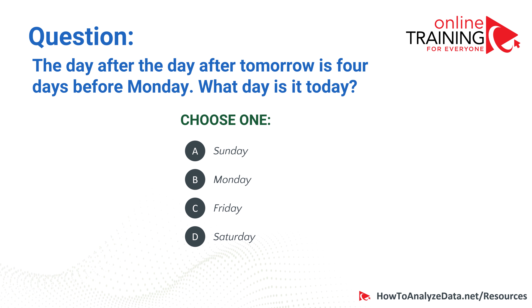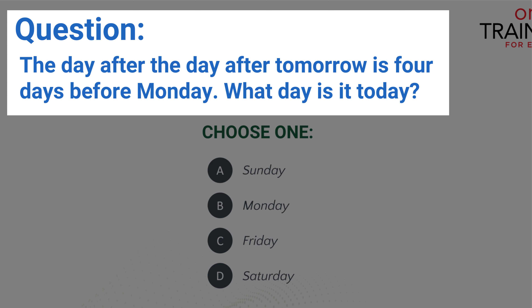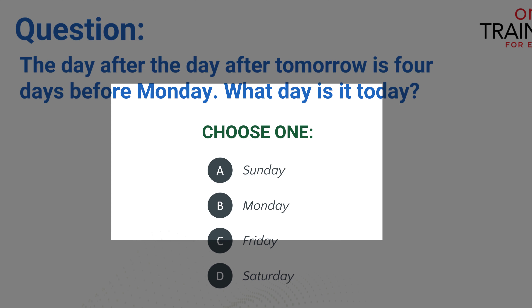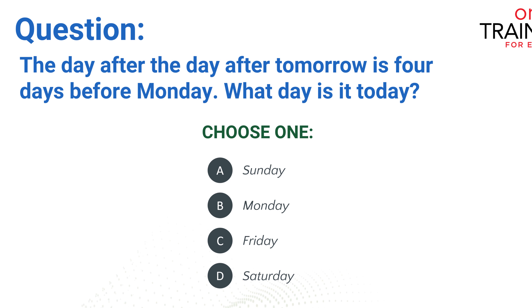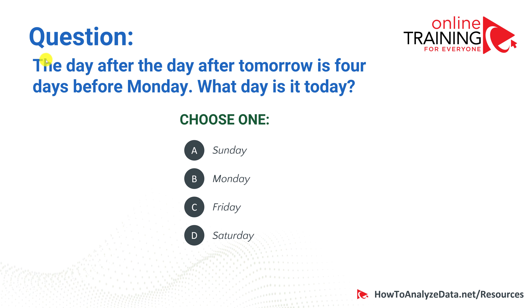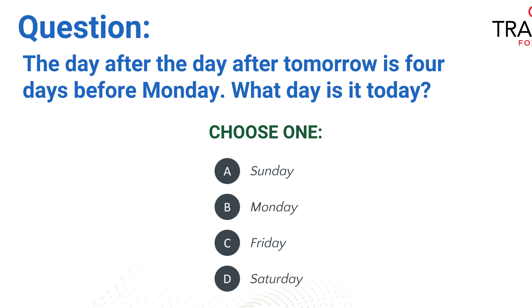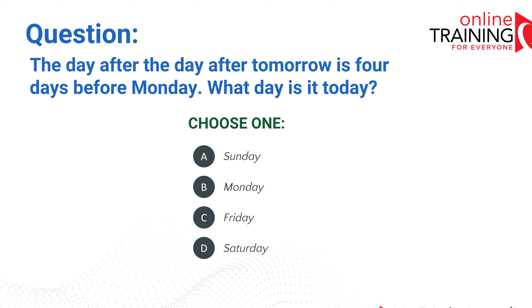Here is a tricky question frequently used in logical reasoning and numerical reasoning tests. The day after the day after tomorrow is four days before Monday. What day is it today? Choices: Sunday, Monday, Friday, Saturday. Using the reverse method: four days before Monday is Thursday. The day before the day before Thursday is Tuesday. If tomorrow is Tuesday, today is Monday. The correct answer is B, Monday.